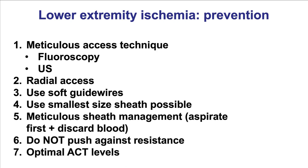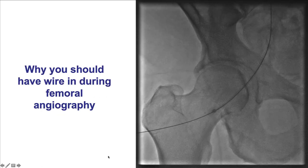How to prevent it? By using careful access technique with fluoroscopy and ultrasound, radial access, optimal femoral access, soft guidewire use, using the smallest possible sheath, and managing it carefully with aspiration and discarding blood with every catheter exchange. One should never push wires, sheaths, or any equipment against resistance. Finally, optimal ACT levels should be maintained throughout the case.